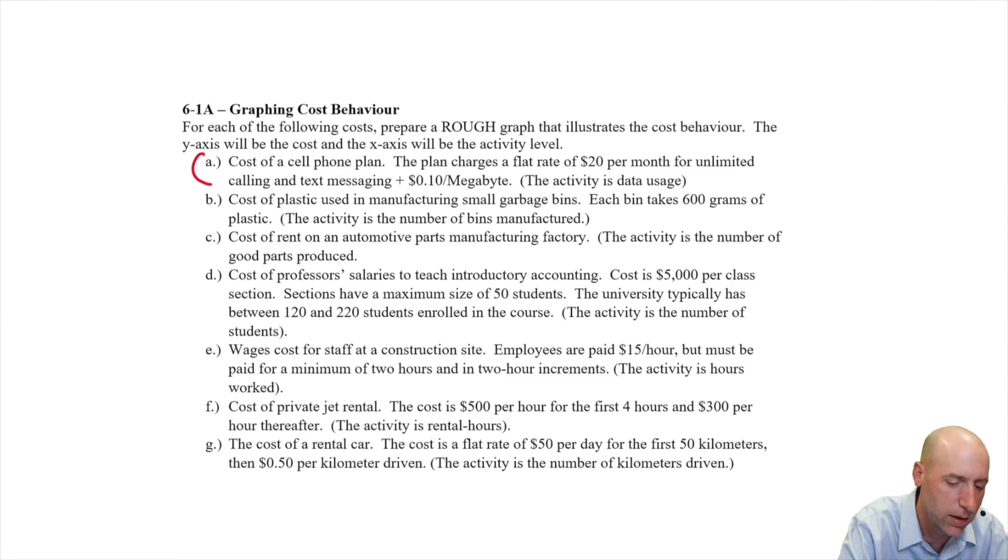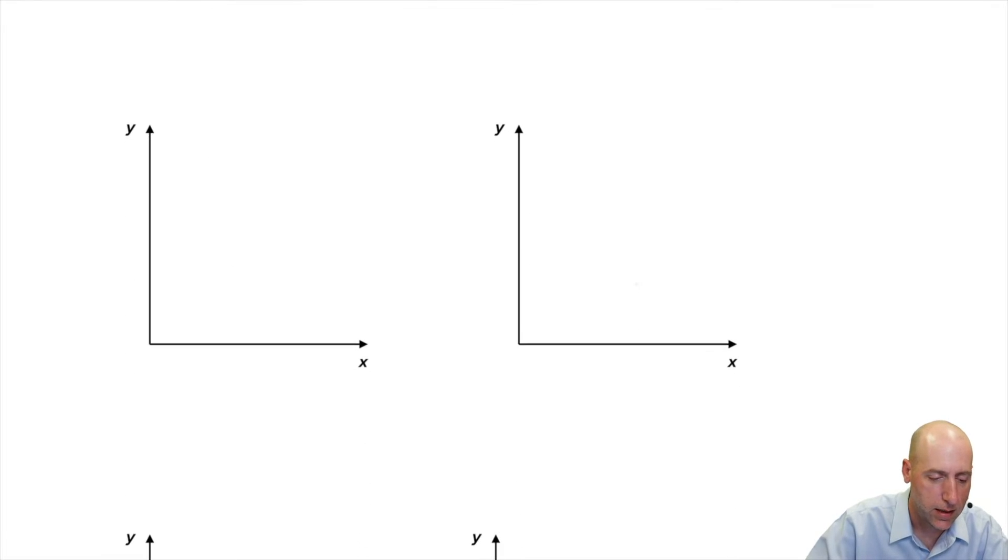So let's do A and just sort of get the feel for this. Cost of a cell phone plan. The plan charges a flat rate of $20 per month for unlimited calling and text messaging plus 10 cents a megabyte. Then the activity is data usage. So again, Y is our cost, X is our megabytes used. Let's just say we use zero megabytes. We just use it for phone and for texting. We don't use any data at all. Well, our plan costs us not zero, right? It costs somewhere above zero. It costs 20 bucks.